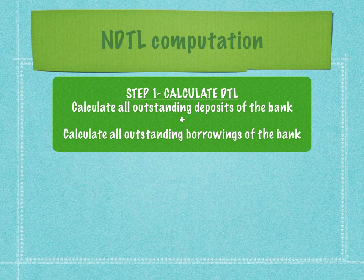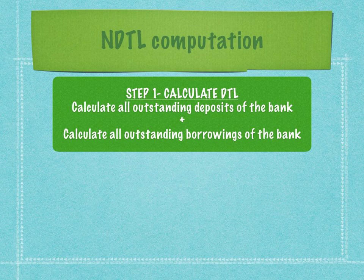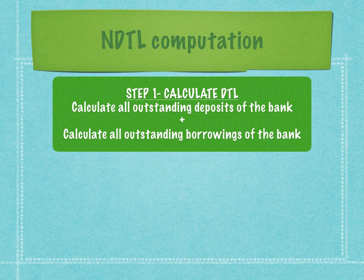So how is NDTL computed? The first step is to calculate the demand and time liabilities. Going back to our example of Marvel Bank, we calculate all the outstanding deposits of Marvel Bank — both the demand and the time liabilities. Plus, we add all the outstanding borrowings of the bank. This could be in the nature of bonds placed with other financial institutions or certificates of deposits floated in the money markets. An aggregate of these two factors gives us what is called DTL — demand and time liabilities.